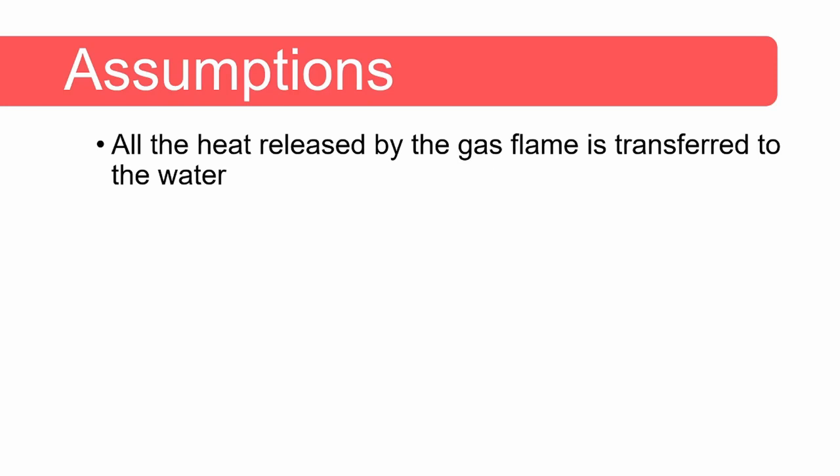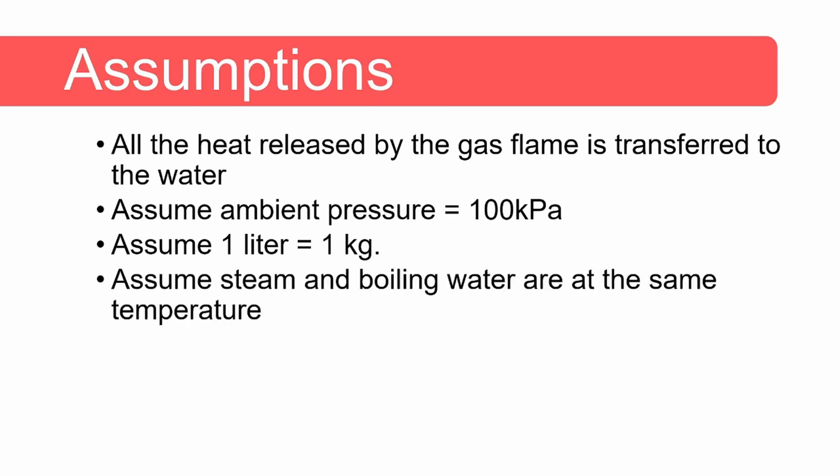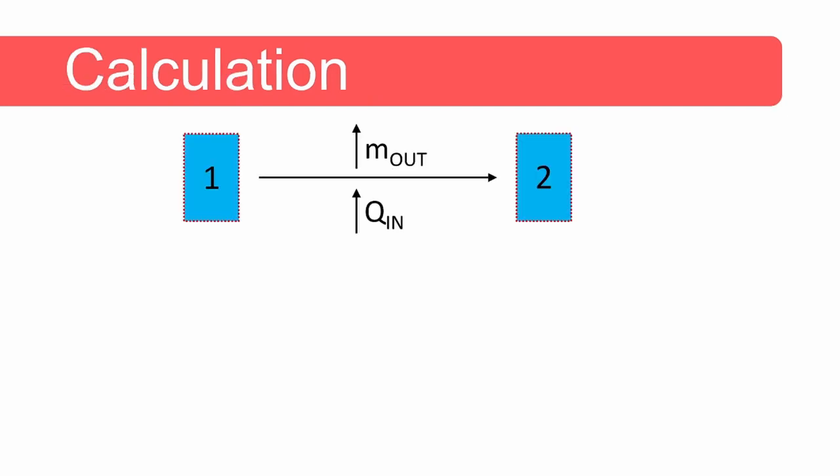First, we need to make some assumptions. We assume that all the heat released by the gas flame is transferred to the water. The ambient pressure is 100 kilopascals. One liter of water equals one kilogram. We also assume the steam is saturated and at the same temperature as the boiling water, and the pot heats from 20 to 100 degrees Celsius — but we ignore the heat required to heat up the pot.